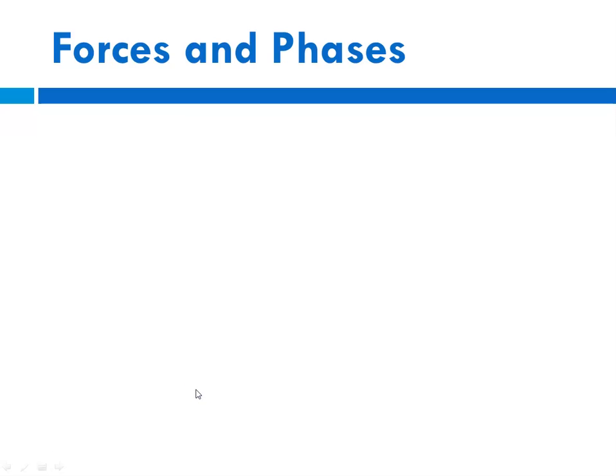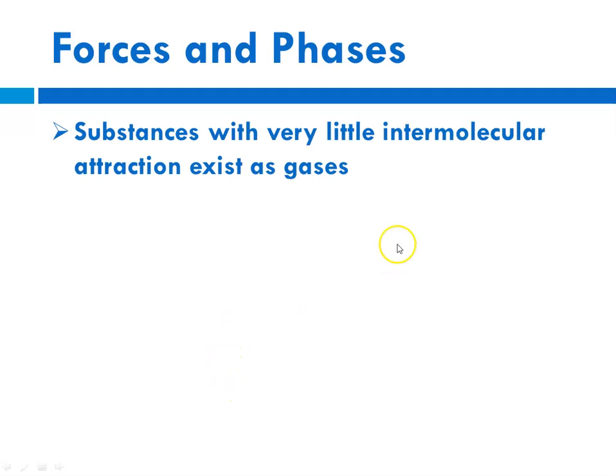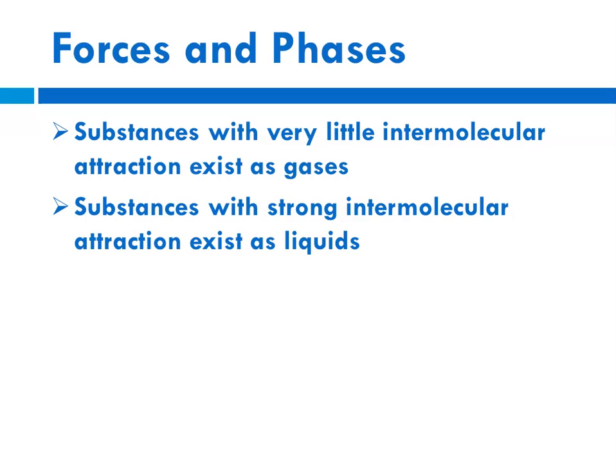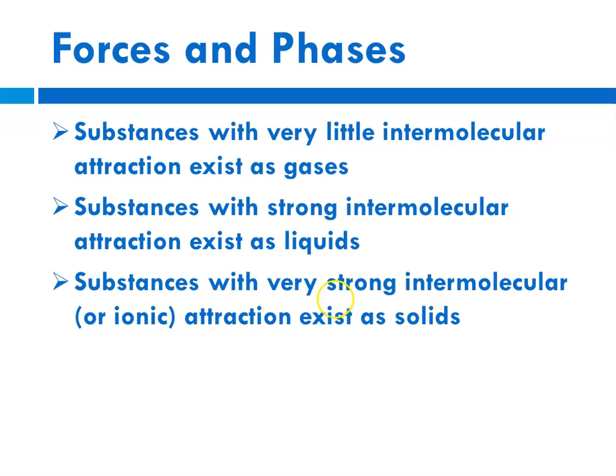So that's pretty much all we're going to talk about with solids at the moment. So to summarize, substances that have very little intermolecular forces of attraction between their particles would exist as gases. Those substances with strong intermolecular forces of attraction between their particles exist as liquids. And those with very strong intermolecular or ionic attraction between their particles exist as solids.